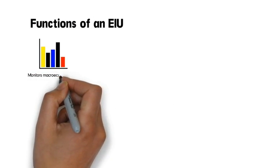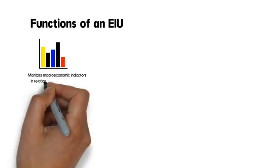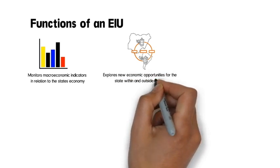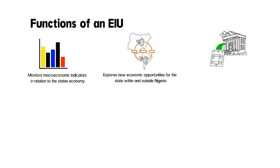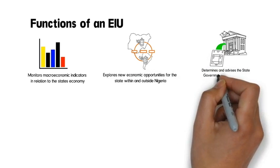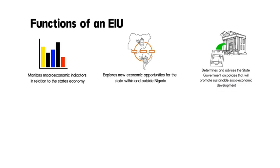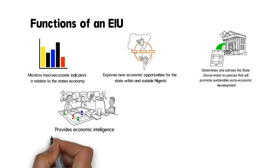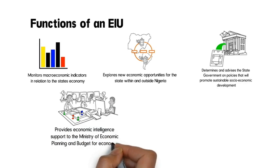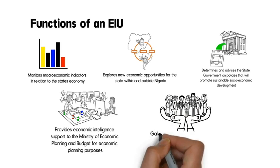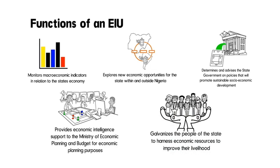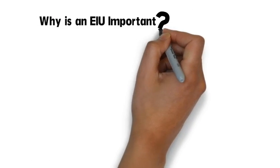Functions of an EIU. An EIU monitors macroeconomic indicators in relation to the state's economy, explores new economic opportunities for the state within and outside Nigeria, determines and advises the state government on policies that will promote sustainable socioeconomic development, provides economic intelligence support to the Ministry of Economic Planning and Budget for economic planning purposes, and galvanizes the people of the state to harness economic resources to improve their livelihood.